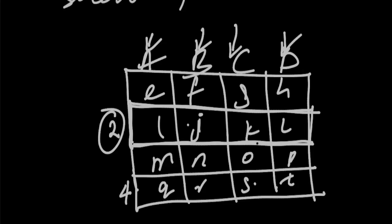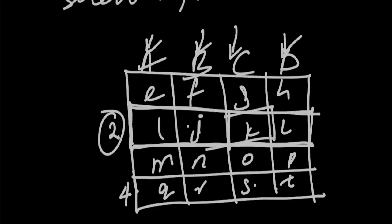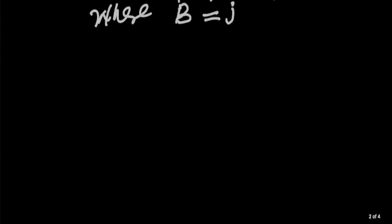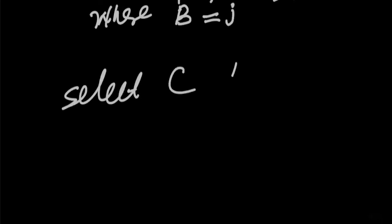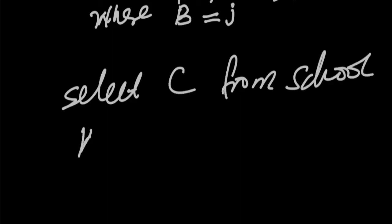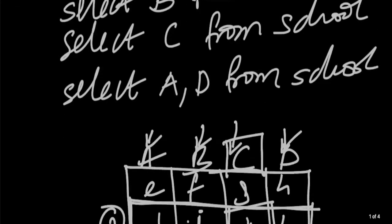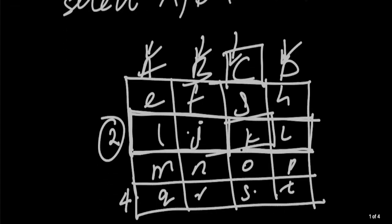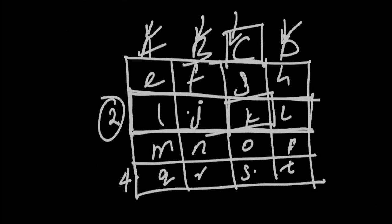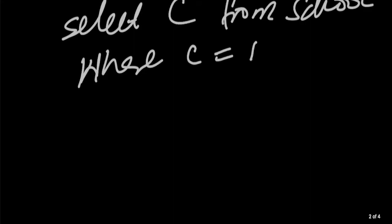But what if you are interested in just this key, C-O-K? That means you are not going to choose all the columns. You select only column C. SELECT column C FROM school WHERE C is equal to K. Then only the value there will be given to me.